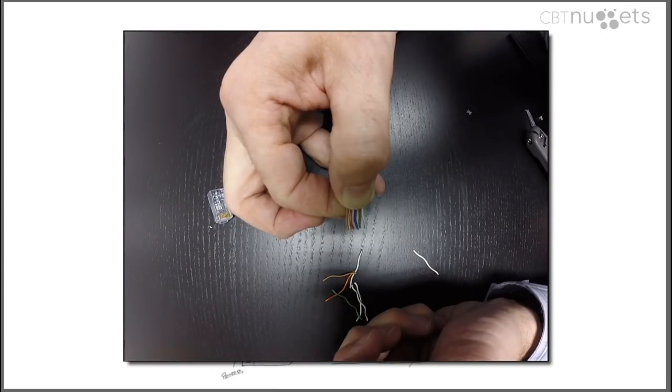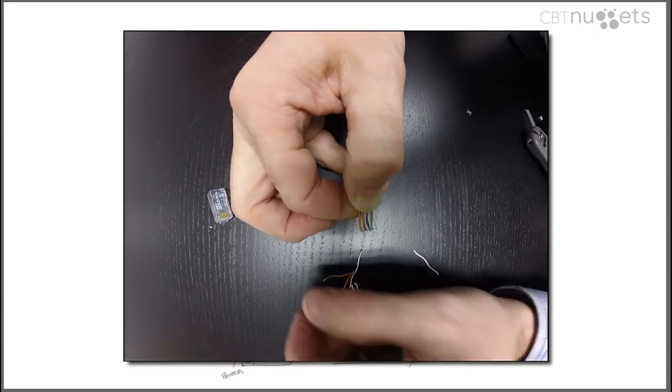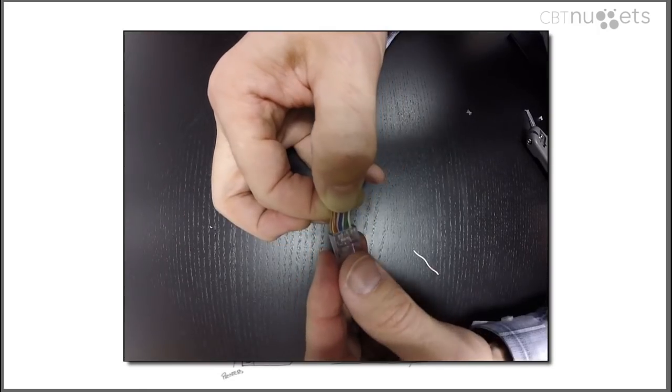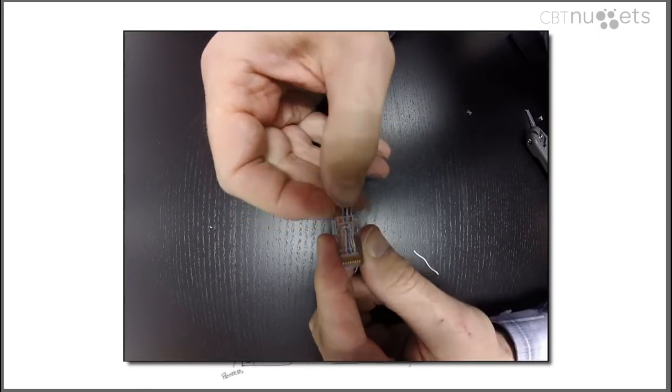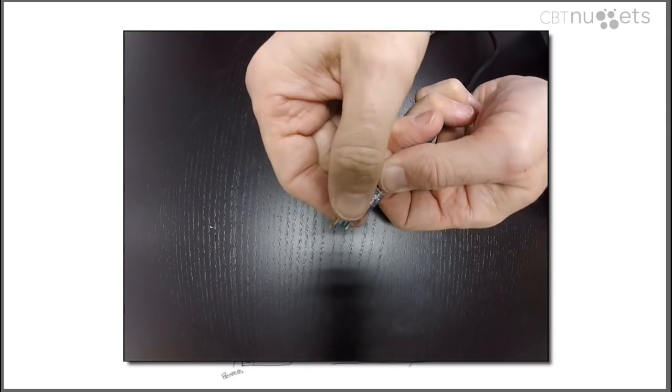Green stripe, green, orange stripe, blue, blue stripe, orange, brown stripe, brown. All right, we'll take that tip and try and slide them in there. There we go.